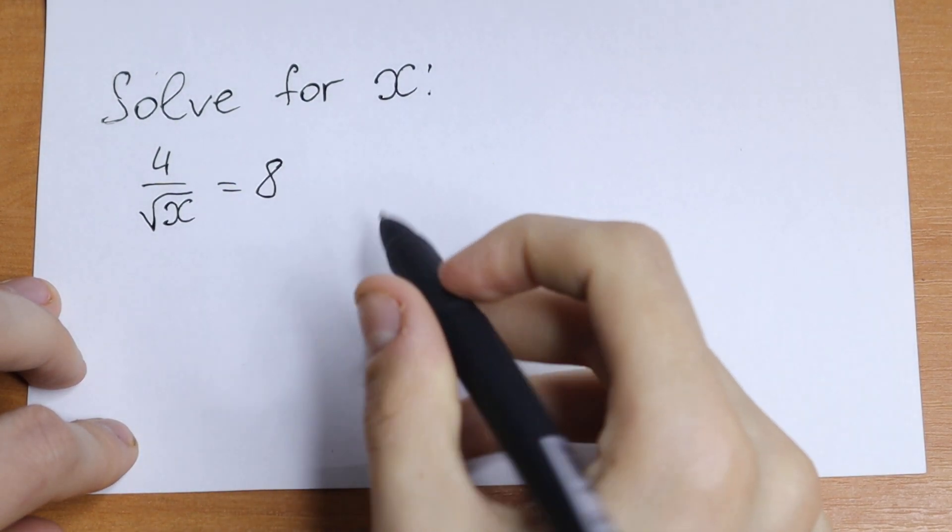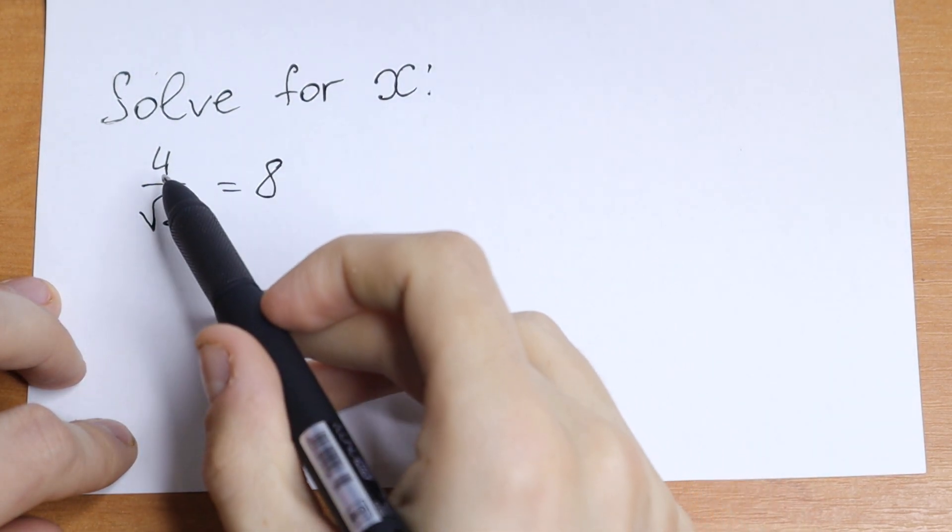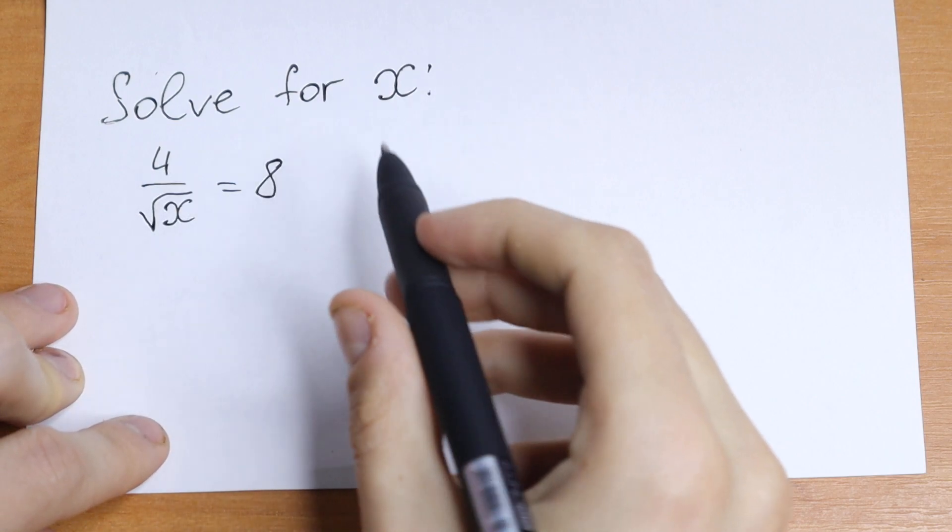Hello everyone, welcome back to MathMool. Today we have an interesting, easy equation. We have 4 divided by square root of x equal to 8.